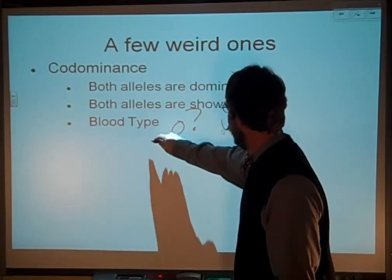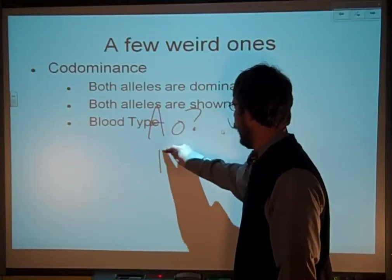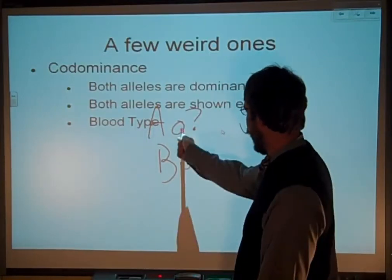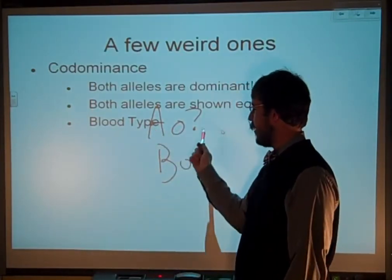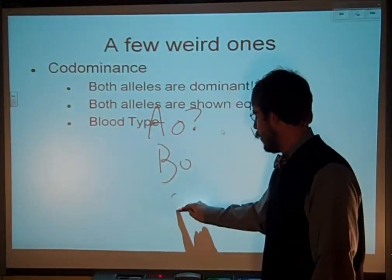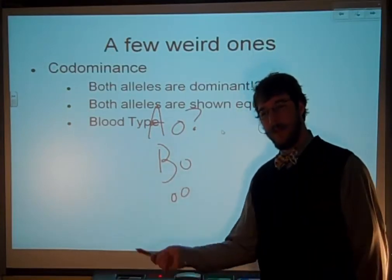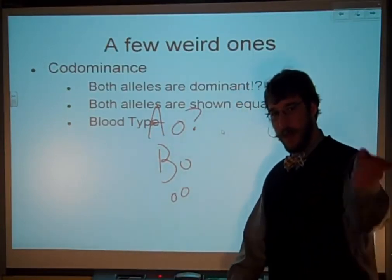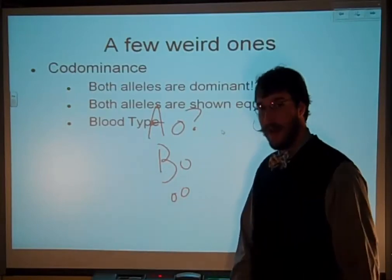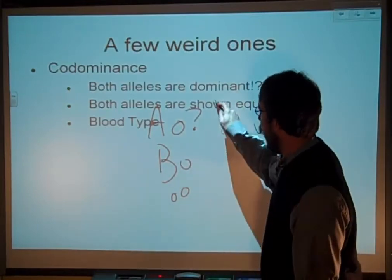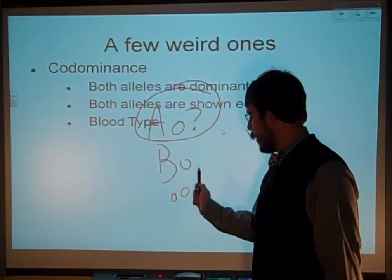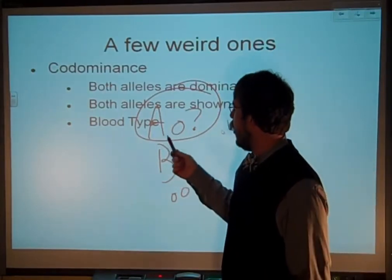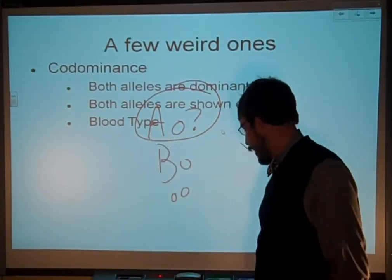There's also blood type O, which is actually recessive to both A and B. So you could be AO or BO — that'll give you type A or type B. In order to be type O, you'd have to be double recessive. My brother is type O, and my dad is type O, which means I'm most likely AO, since I'm type A.